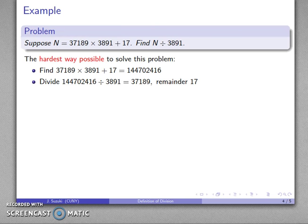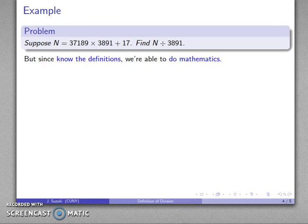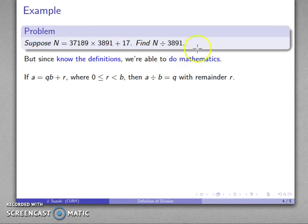But the thing to remember is that at this point, we haven't actually introduced any method of doing this division. So if you want to put yourself in the position of a student, you don't know how to divide. So how are you going to solve the problem? Well, since we know the definitions, we can do mathematics. So let's go back to our definition. Our definition of divide tells us that if a equals q times b plus r, where r is between 0 and b, then a divided by b is q with remainder r.